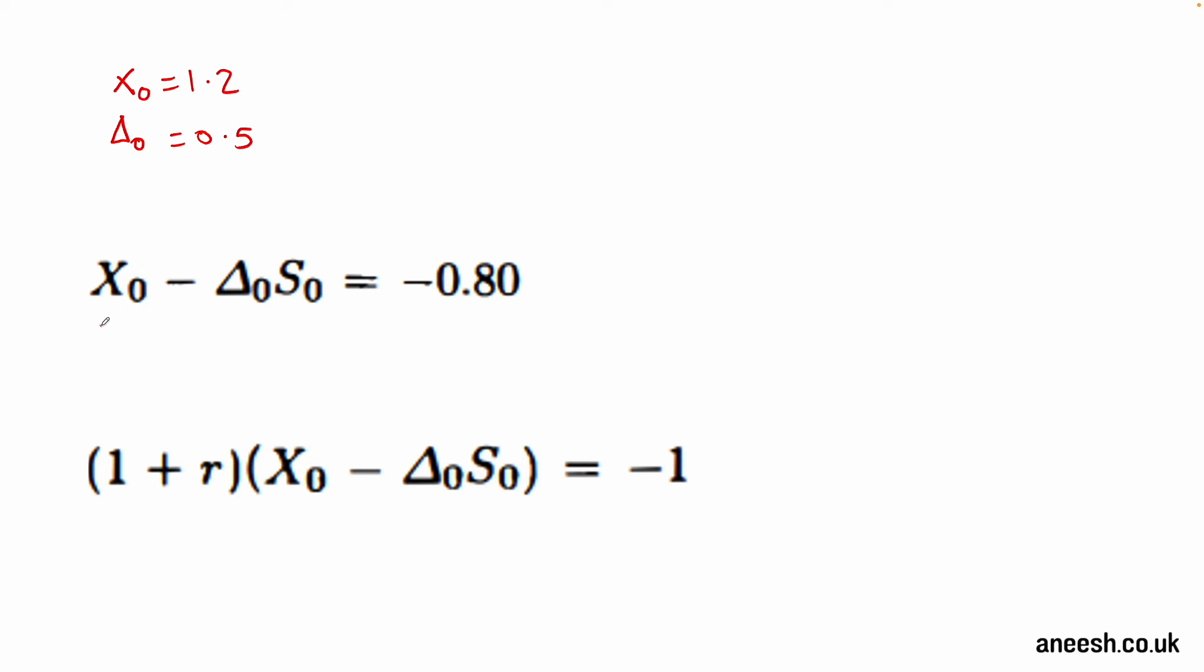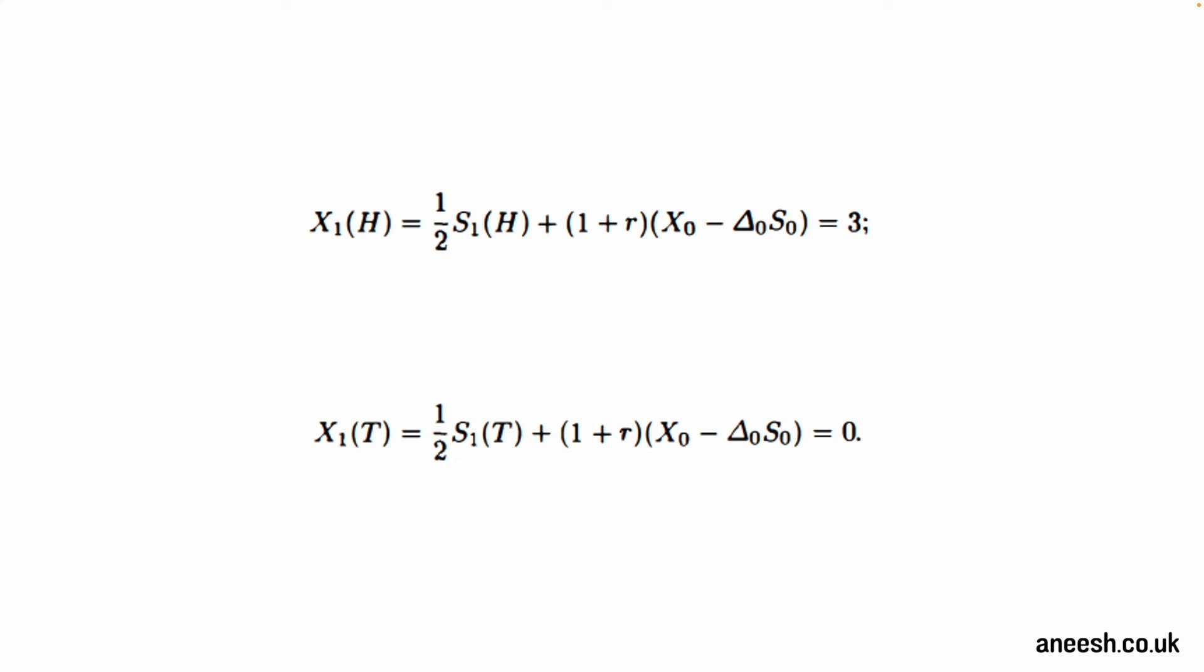At time 0, our cash position is the initial wealth minus the value of our stock multiplied by delta, where delta represents how much stock we own and that's going to be 0.5. As a result, we have a cash balance of minus 0.8, which is what we need to borrow from the money market. At time 1, our cash position is multiplied by 1 plus R as that is the interest rate, and as we're in debt by 0.8 to the money market, at time 1 it's going to become negative 1.